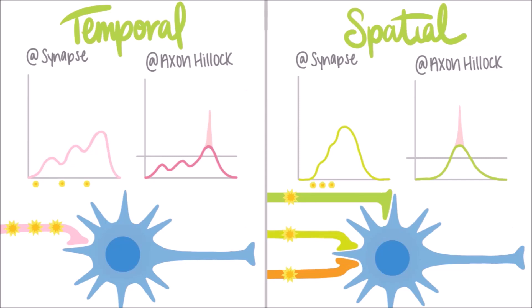Spatial summation involves several presynaptic neurons synapsing on a single postsynaptic neuron. Action potentials on each presynaptic neuron arrive simultaneously at the postsynaptic neuron, resulting in a large compound EPSP at the axon hillock.